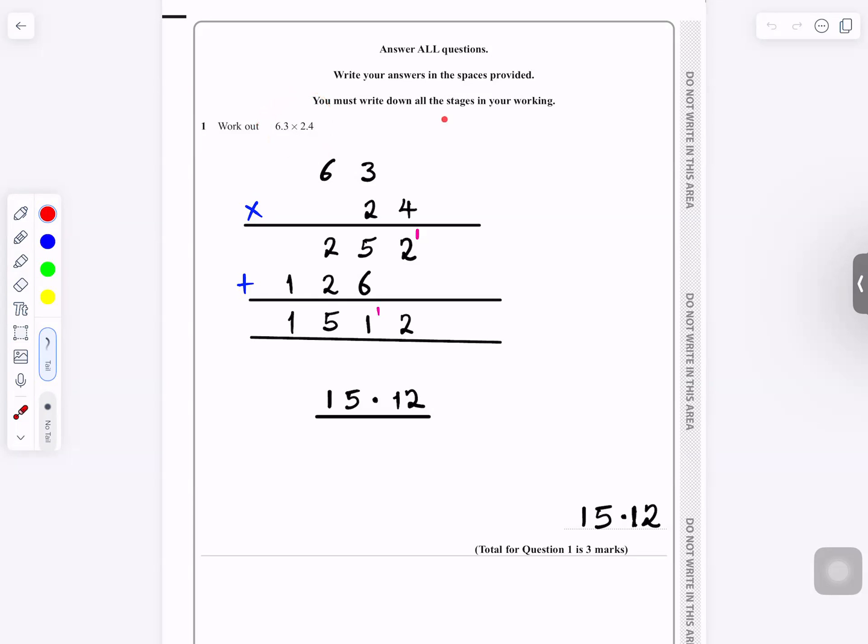So it's easier to multiply 63 times 24. And then you will get 1512. And then you put the decimal place. So you go 15.12.